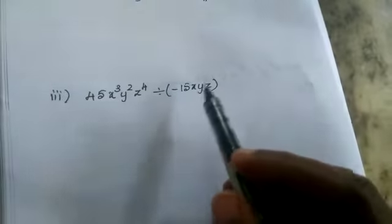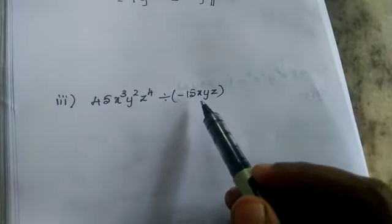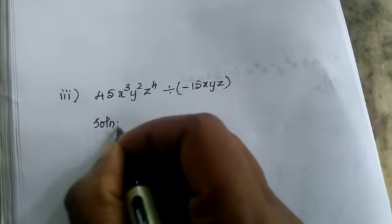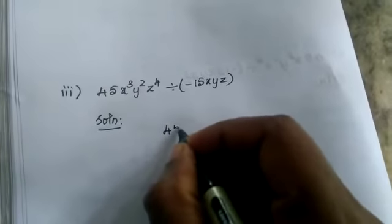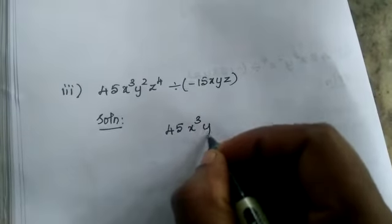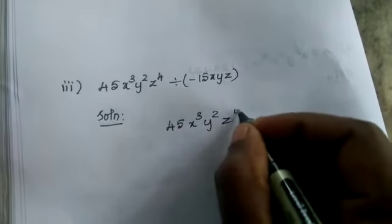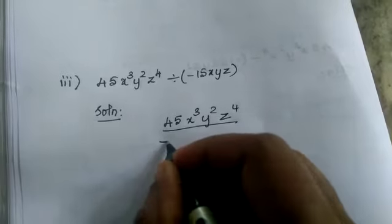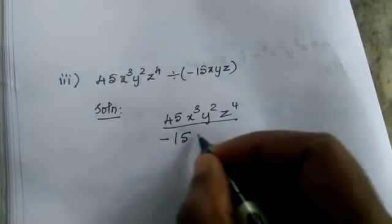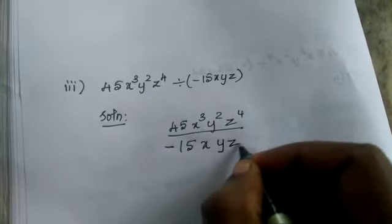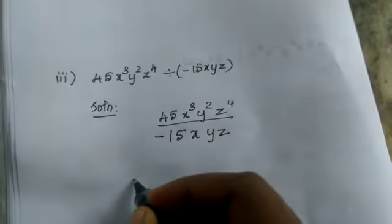45x³y²z⁴ divided by minus 15xyz². Now we are going to do it. 45x³y²z⁴ divided by -15xyz². First, same with the division rule.